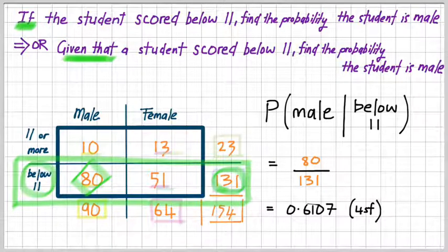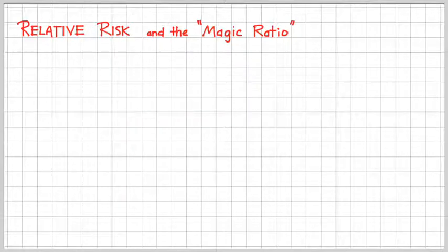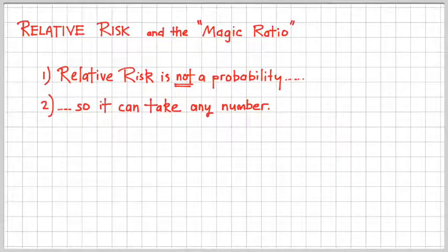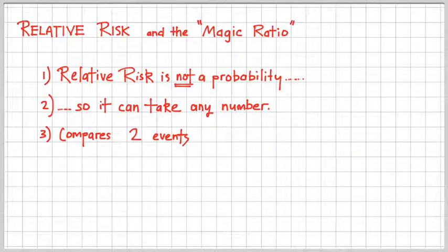That is conditional probability. If you understood this example and the previous example, then you're on your way to success. We're going to move on to the next part, which is relative risk. Relative risk and the magic ratio — we're going to mainly focus on what relative risk is and how to use the magic ratio to calculate it. Please keep in mind: relative risk is not a probability, so it can take any number. A probability cannot be more than one, however relative risk could be any number below or even above one. What we are doing is comparing two probabilities — that's where the word 'relative' comes from.